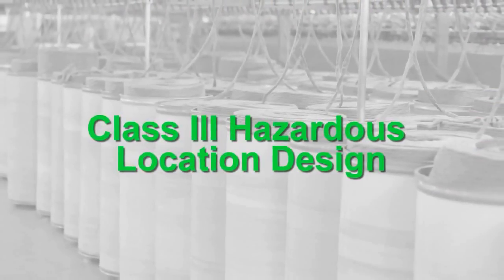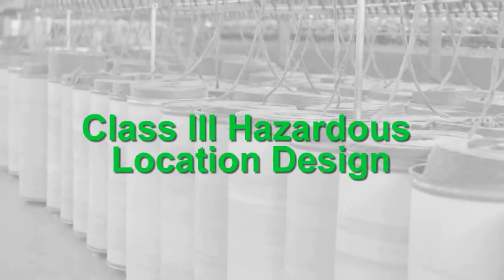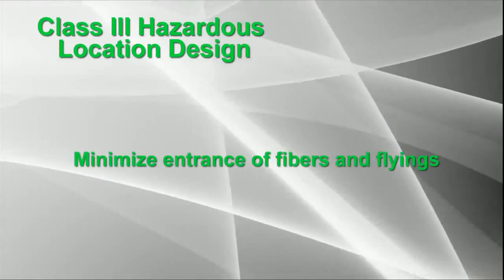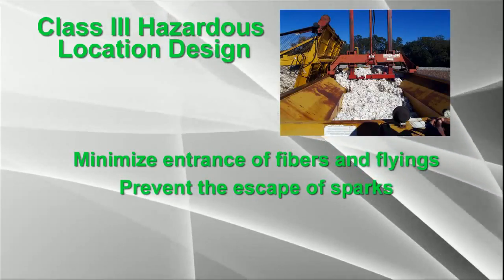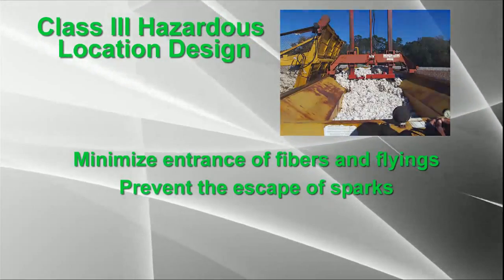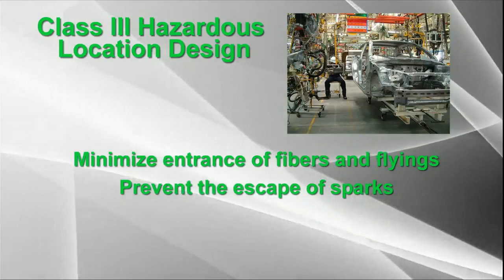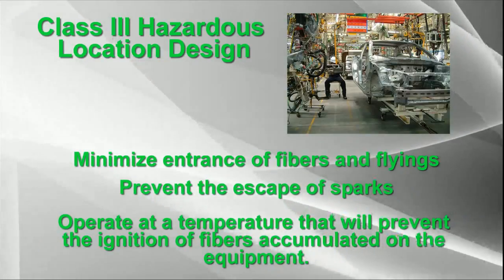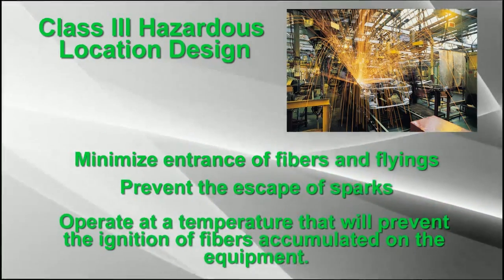For Class III equipment, there is very little difference from the design of Class II. Class III equipment must minimize the entrance of fibers and flyings, prevent the escape of sparks, burning material, or hot metal particles resulting from equipment failure, and operate at a normal temperature that will prevent the ignition of fibers accumulated on the equipment.